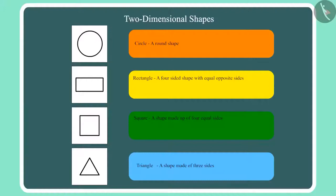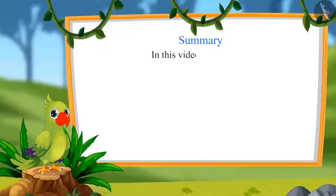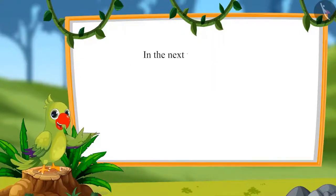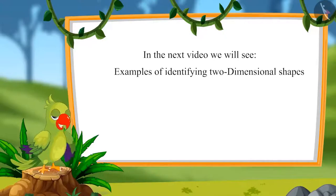Children, today we recognized few two-dimensional shapes and their names. We call this round shape a circle. The four-sided shape with equal opposite sides is called a rectangle. And the shape called square is made up of four equal sides. And this is a triangle because this shape is made up of three sides. That was all for today. In the next video, we will see examples of identifying two-dimensional shapes. Bye children.